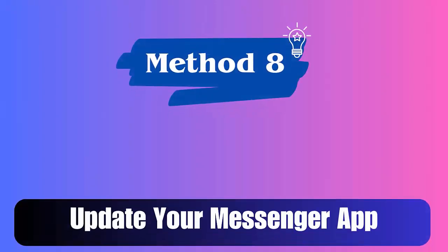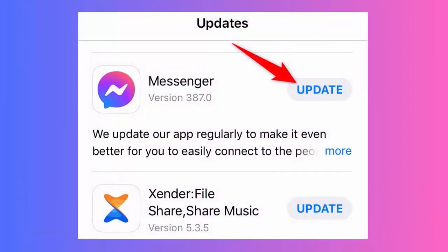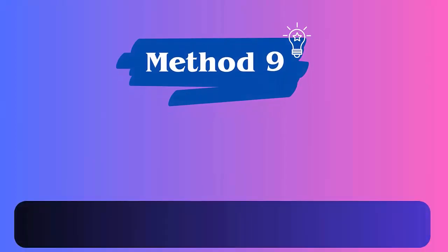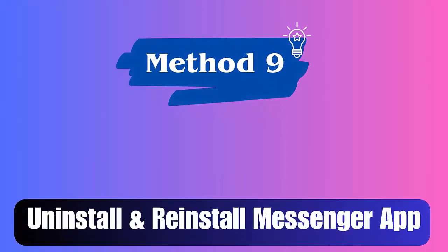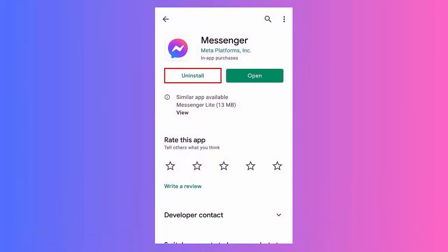Method 8: Update your Messenger app. Here are the steps: first, go to the Google Play Store, then click on the profile icon and choose 'My Apps and Games.' Now check the list of installed apps, look for the Messenger app, then check and click on the Update option.